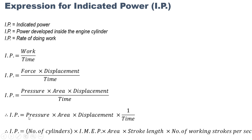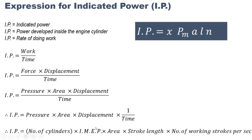Let us now modify this equation. In place of number of cylinders we use indicated mean effective pressure (IMEP), then area of the cylinder or piston, then stroke length in place of displacement, and one upon time as number of working strokes per second. So the notation is: x for number of cylinders, pm for IMEP, a for area, l for stroke length, and n for number of working strokes per second.